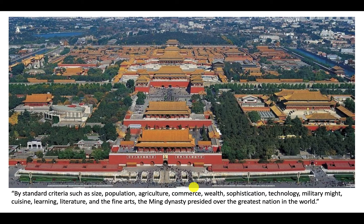I'm sure a lot of you know this — the Forbidden City in Beijing, palaces of the imperial family, built during the Ming dynasty. I'm quoting Mungelo here. He says: 'By standard criteria such as size, population, agriculture, commerce, wealth, sophistication, technology, military might, cuisine, learning, literature, and the fine arts, the Ming dynasty presided over the greatest nation in the world.'